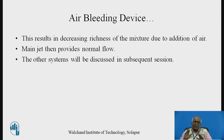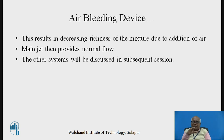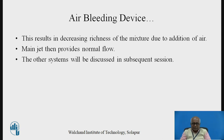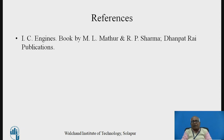So these two devices — the compensating jet and the emulsion or air bleeding device — help us to maintain a constant air-fuel ratio throughout all speeds. The other systems will be discussed in the subsequent session. References for this session, including all figures and subject matter, are taken from the book IC Engines by Mathur and Sharma, Tanpatra Publications. Thank you.